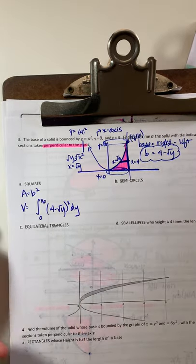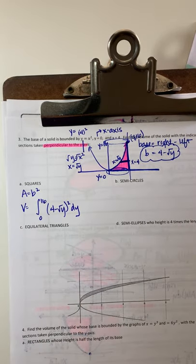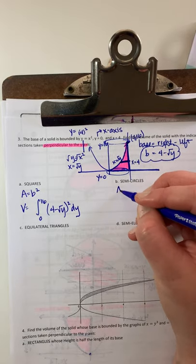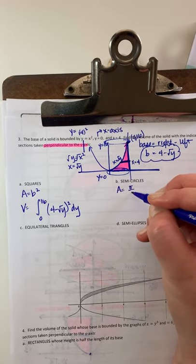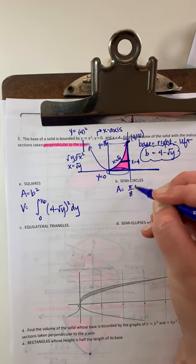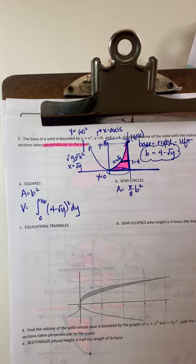For square cross-sections: area equals base squared. Volume is the integral from 0 to 16 of the base, 4 minus root y, squared, dy.